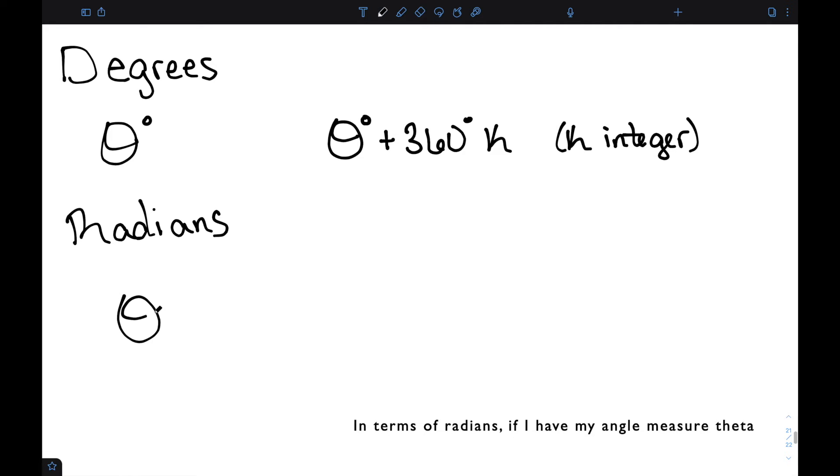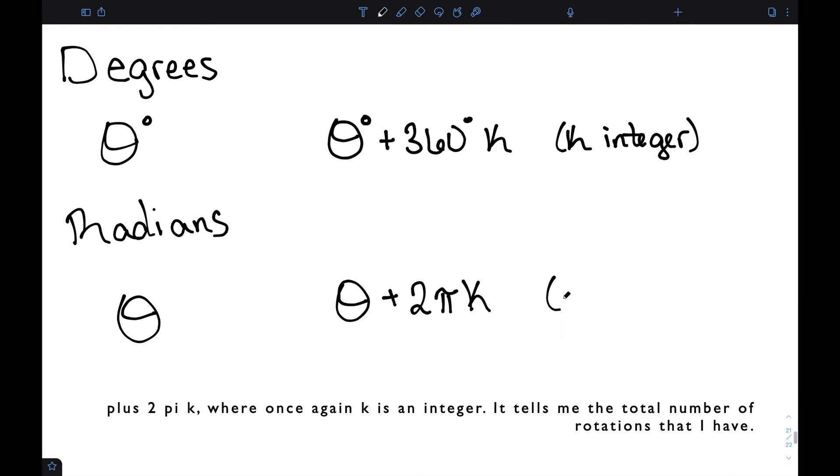In terms of radians, if I have my angle measure theta, my coterminal angles look like theta plus 2 pi k. Where once again k is an integer. It tells me the total number of rotations that I have.